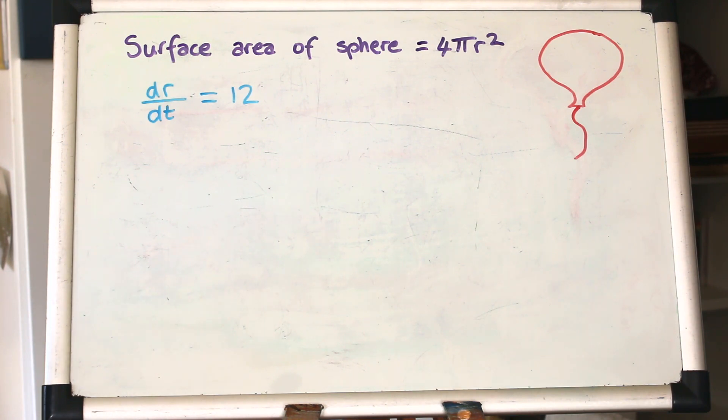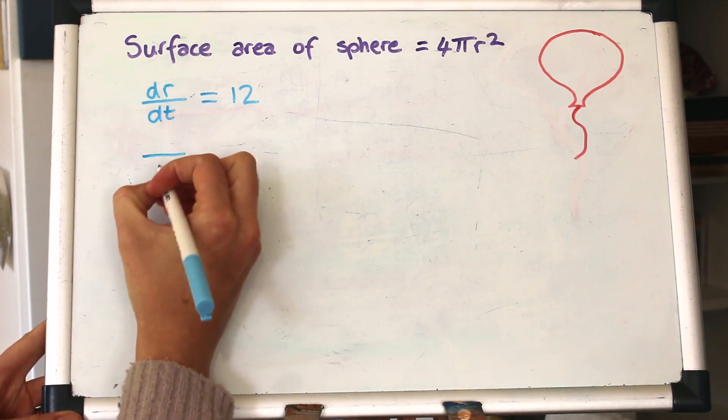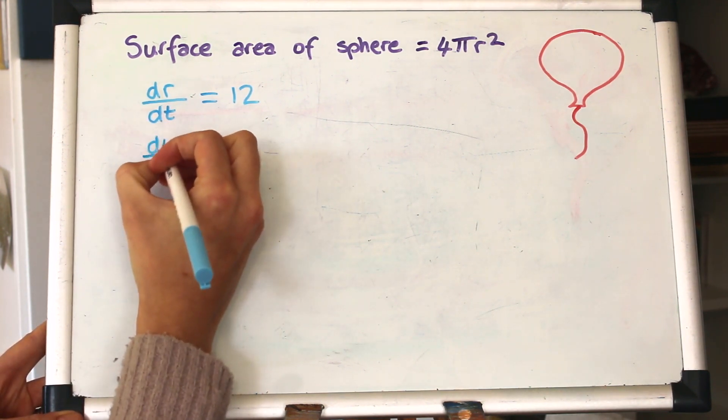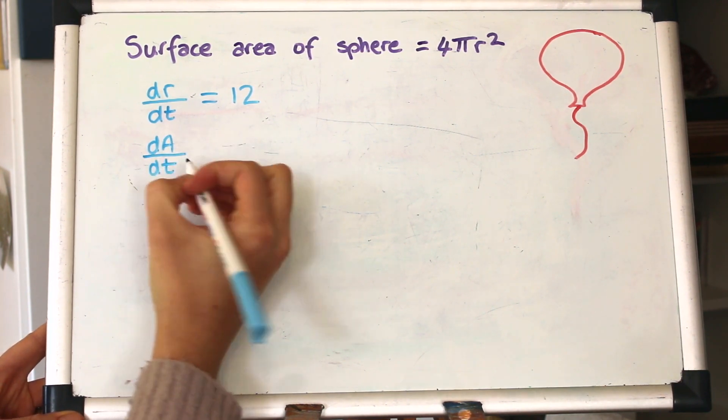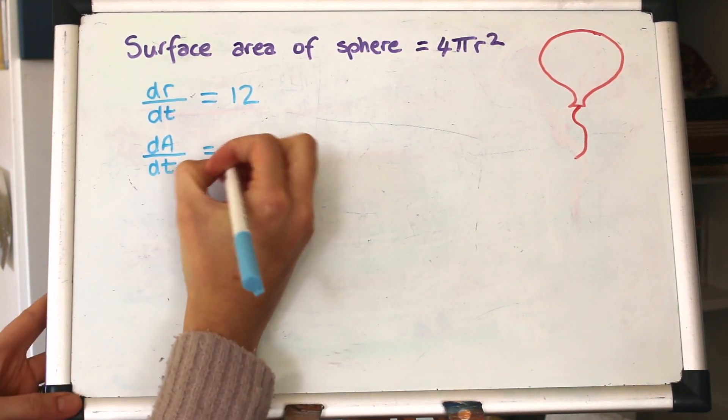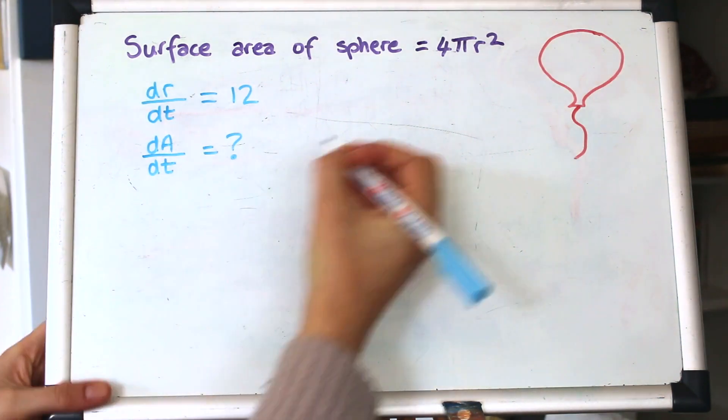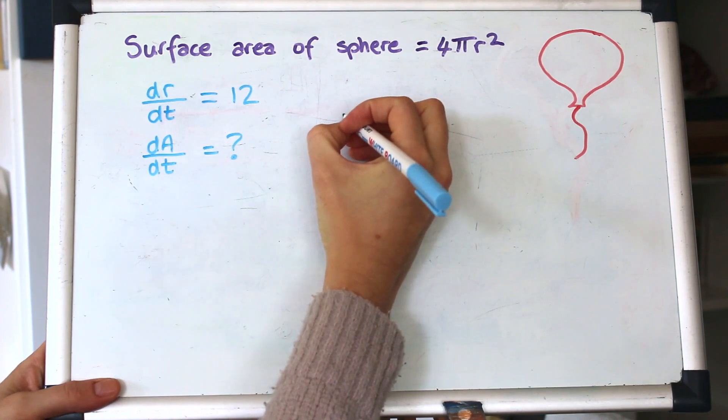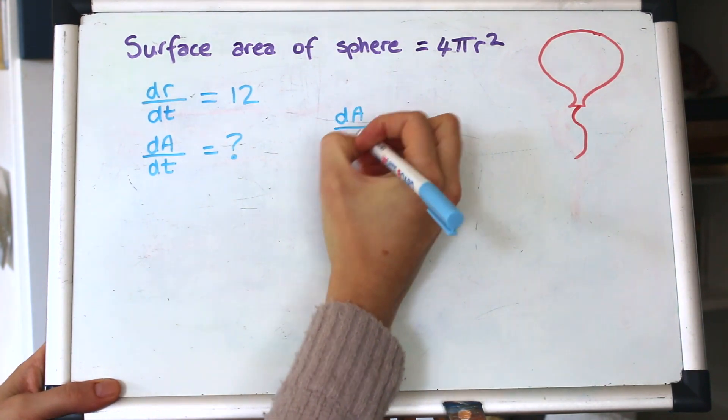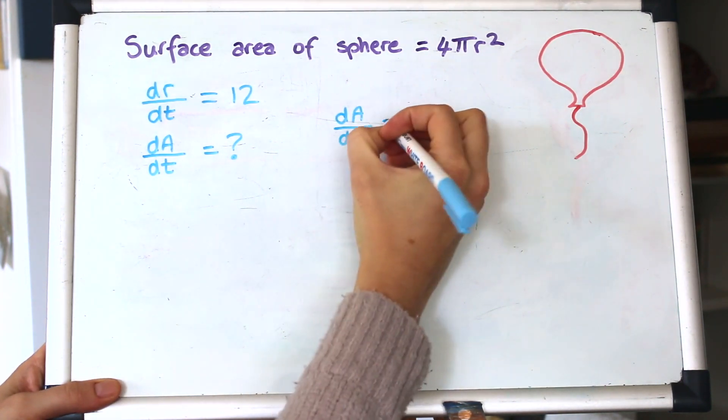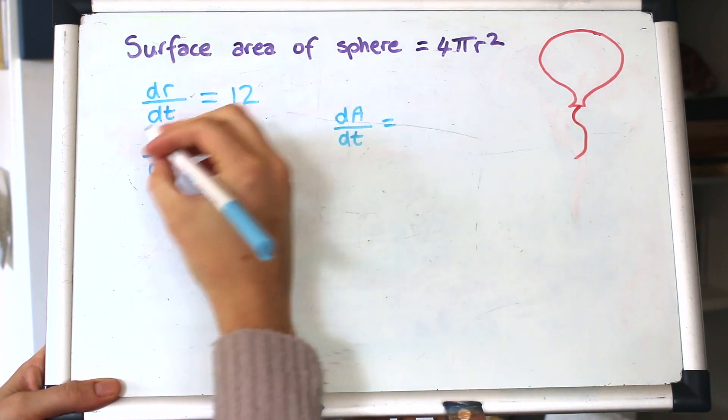We're then asked to find the rate that the surface area changes. So we're asked to find how an area increases. So we'll call that dA and it's the rate again, so by dt. That's what we're being asked for. And again, if you look back at the question, the unit says centimeters squared per hour. So that agrees, an area divided by time.